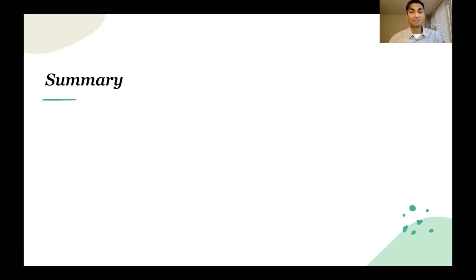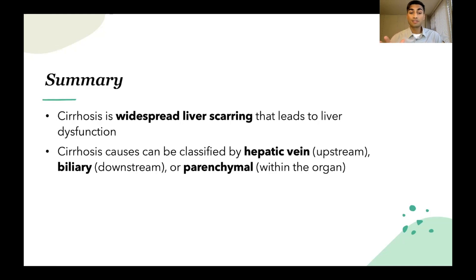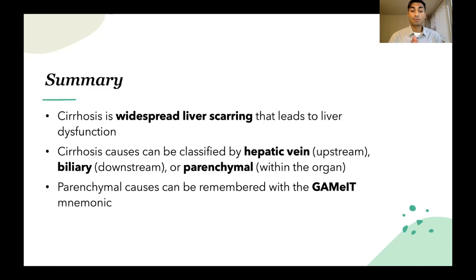Alright, let's summarize what we learned today. We learned that cirrhosis is widespread liver scarring that leads to liver dysfunction. We learned that cirrhosis causes can be classified by hepatic vein — upstream of the liver — biliary, which is downstream, or parenchymal causes — within the liver organ tissue itself.